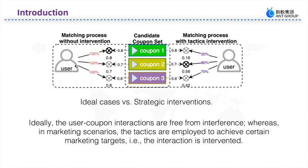First, in the real-world scenario of coupon recommendations, the coupon allocation process is affected by both the recommendation model and the marketing tactics. These tactics may result in an imbalance in user-coupon interactions, leading to a departure from the user's actual preference. We call this disparity the matching bias.